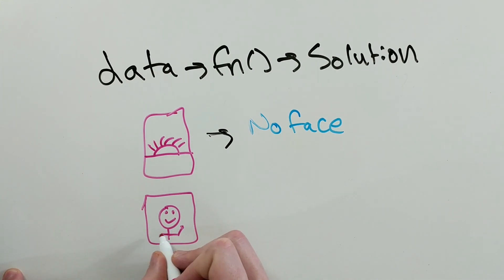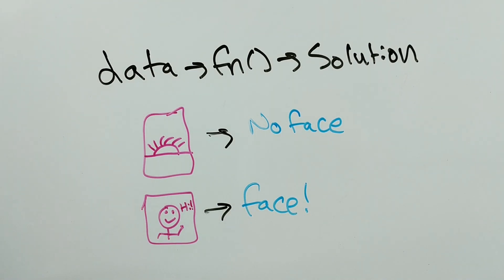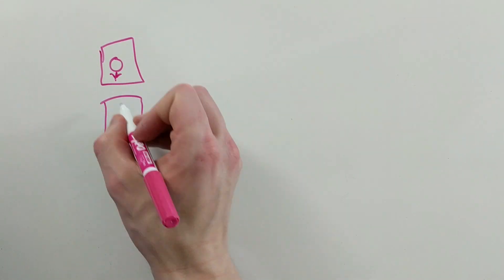So given our neural network, how do we modify it so that it will learn a function to map the input to the associated output? That is, how do we train the network?